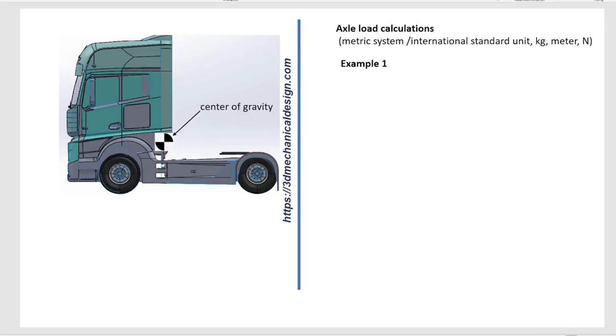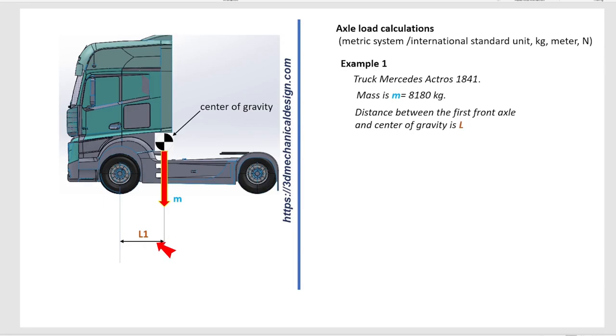Example 1. Truck Mercedes Actros 1841. Mass is M equals 8180 kilograms. Distance between the first front axle and center of gravity is L1 equals 1091 millimeters. Distance between two axles is L equals 3600 millimeters.